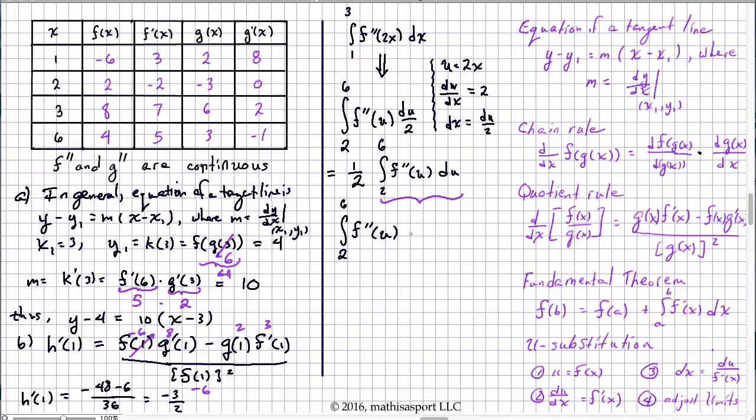du can be written as f prime of 6 minus f prime of 2. I'm just going to add this by an application of the fundamental theorem. Okay, so f prime of 6, what is that? Well we have that in the table at last so f prime of 6 we know is equal to 5. f prime of 2 we have negative 2. And so 5 minus negative 2 is 7.